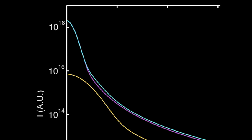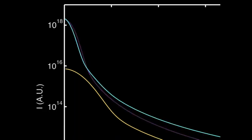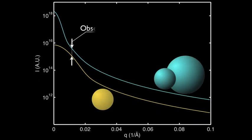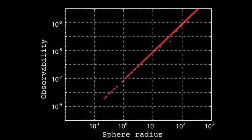What you should also see is that at higher q there is a significant contribution of the smaller sized particle to the total scattering function. To investigate this, we can define a parameter called observability as the maximum fractional contribution of the smaller sphere to the total scattering pattern. We can plot this observability for many different spheres in polydispersed systems — with sphere radius on the horizontal axis and observability on the vertical axis.